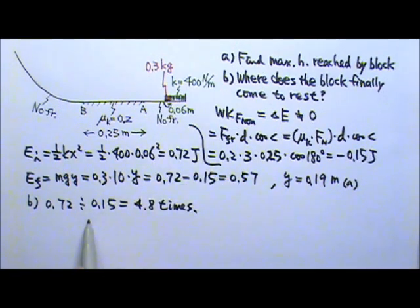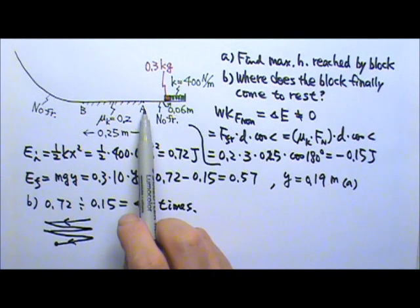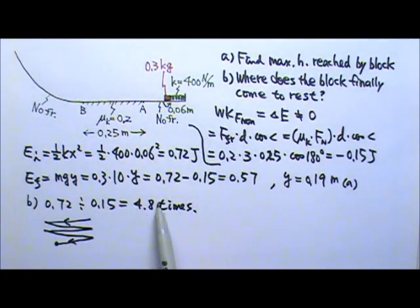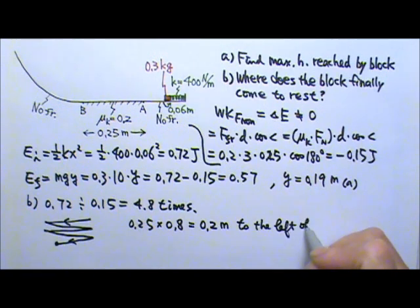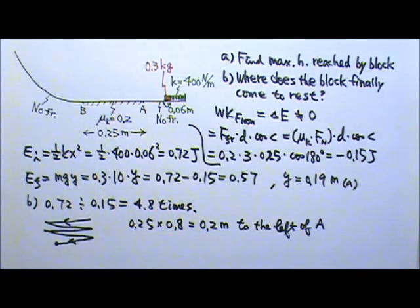With 0.72 joules, it can afford to go through that region 4.8 times. The block starts on the right side, so it goes through the first, second, third, fourth, and then the fifth time, it doesn't go all the way through. It only can go 0.8 times the total distance. So it's going to end up somewhere there, close to B. If we want that specific location, we can do this. The distance between point A and B is 0.25 meters. The fifth trip goes 0.8 the way through. So 0.25 times 0.8, that is 0.2 meters. That means it goes 0.2 meters to the left of A. So 0.2 meters from point A, right there. That's the final position for the block.